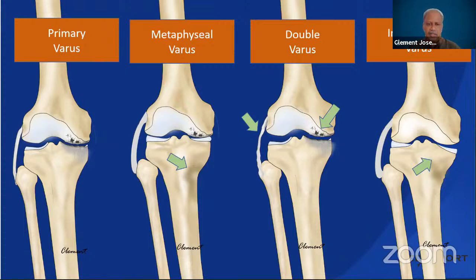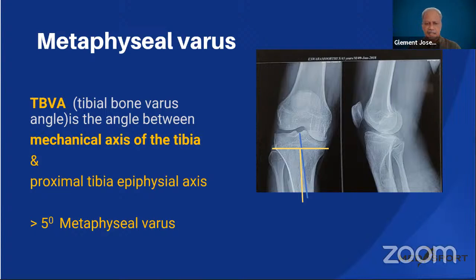Metaphyseal varus can be identified by an angle called the tibial bone varus angle — the angle between the mechanical axis of the tibia and the proximal tibial metaphyseal axis. If it is more than five degrees, it indicates metaphyseal varus. These patients respond very well to a high tibial osteotomy.